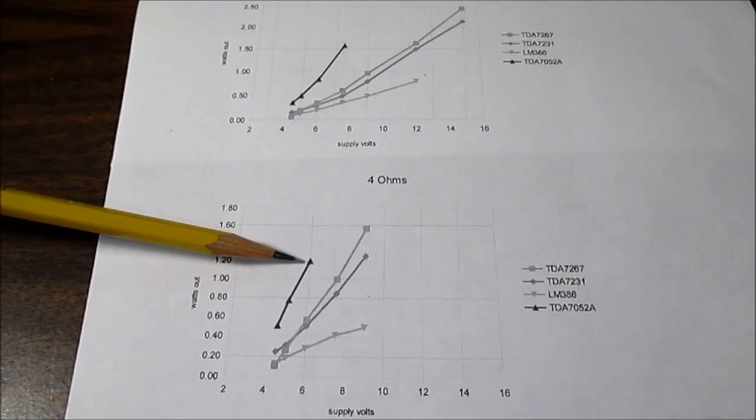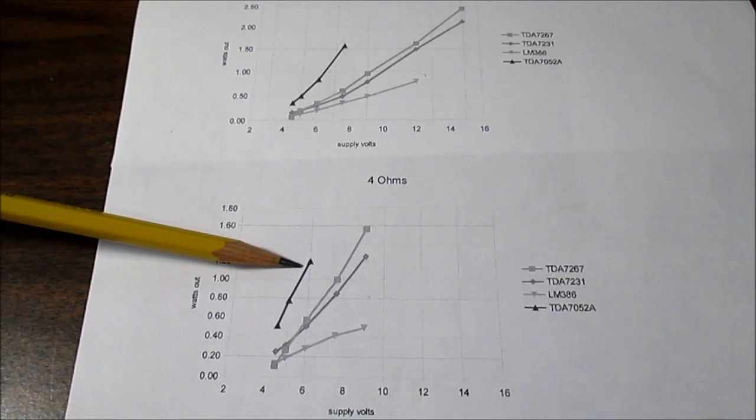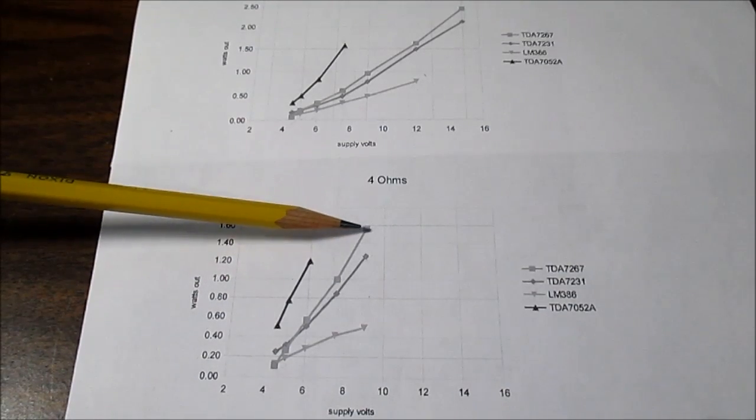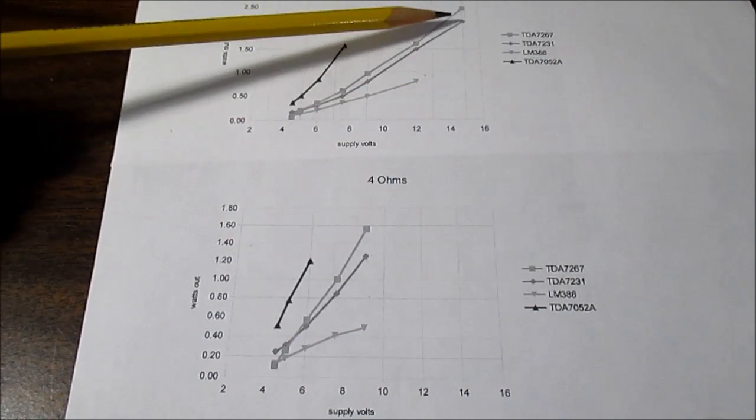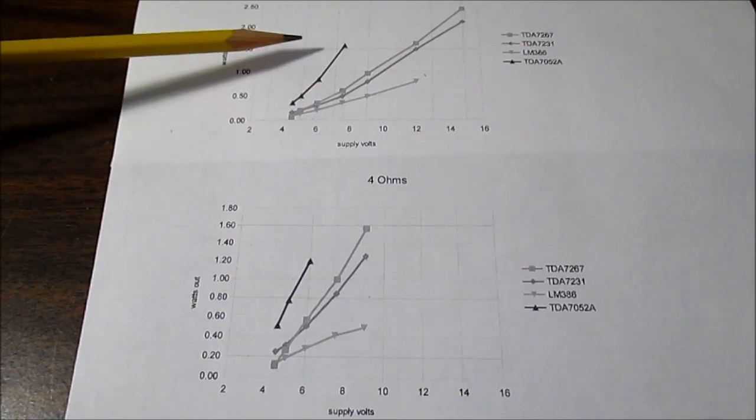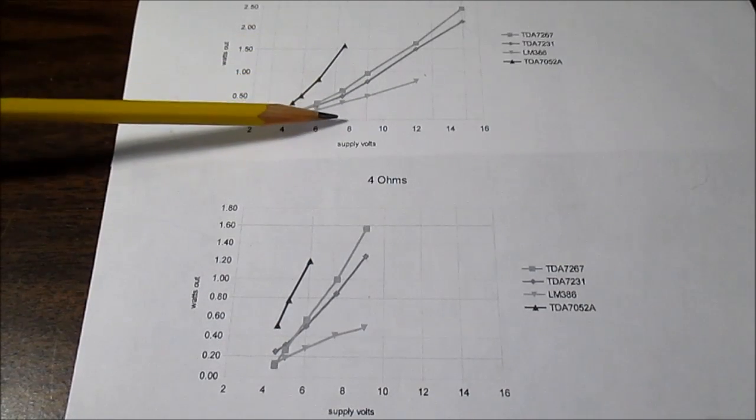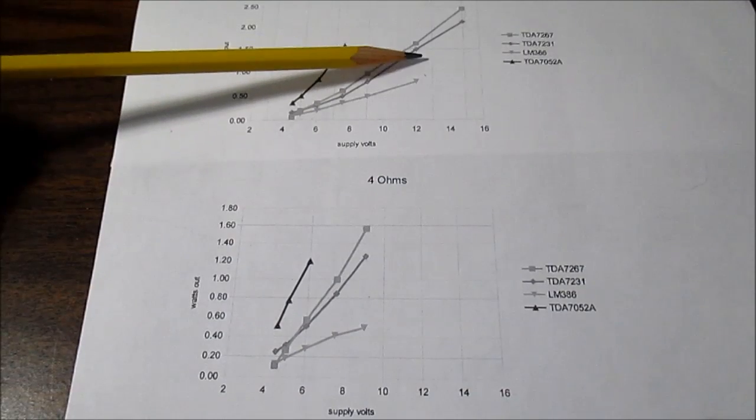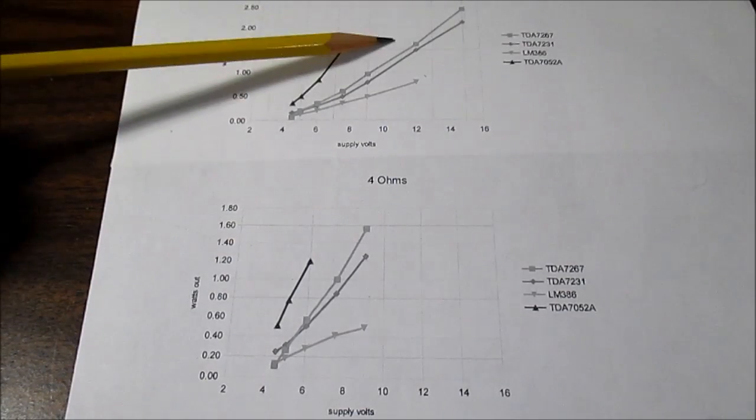Now due to the thermal and current limitations of the 7052, you really can't run that at higher supply voltages with a load. But you can see the other chips can put out much more output, because they will run it much higher supply voltages. So you can see here that the 7052 can put out the same output running at only 7.5 volts than the other chip amps running at 12 volts. So you can see the benefit there if you have limited supply voltage. And of course that's at 8 ohm loads.